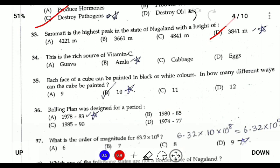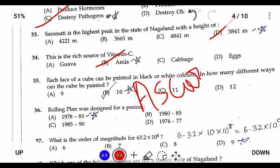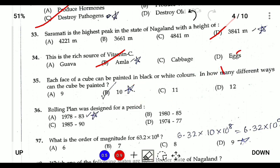Question thirty-four: the richest source of Vitamin C is Amla. The chemical name of Vitamin C is ascorbic acid.